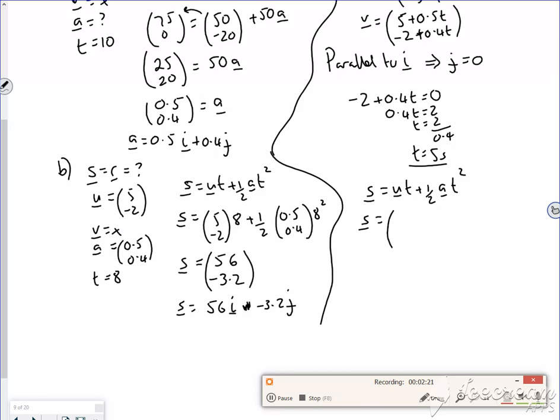So what was that then? So that's going to be (5, -2) times by 5 seconds plus 0.5 times (0.5, 0.4) times by 5 squared. And if it did have a different position vector, we'd add it on at the end if it was started off somewhere else.